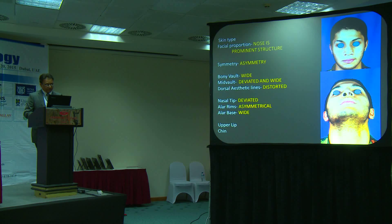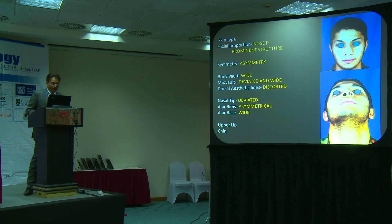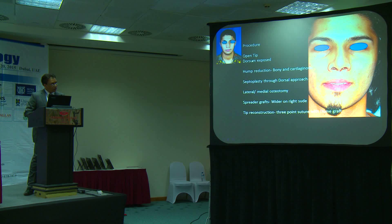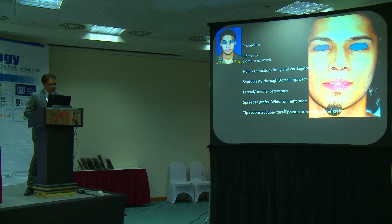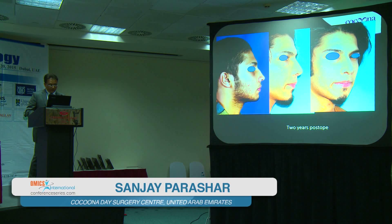This is an example of the postoperative result. Sometimes patients present with severe deformities, and it's important to ensure the patient understands what asymmetry and deviation are present and what the limitations are — whether it is possible to make the nose completely straight or whether some residual deviation may remain, which is often the case in severe deformities. The procedure for this case was open-tip rhinoplasty with dorsal exposure, hump reduction of both bone and cartilage, septoplasty through a dorsal approach, medial and lateral osteotomies, spreader grafts to restore function, and tip reconstruction using various suture techniques. The outcome remained well postoperatively long-term.